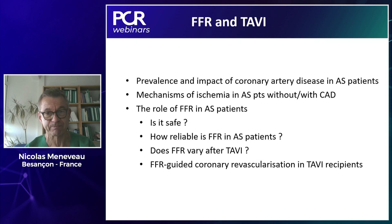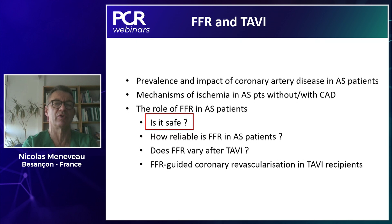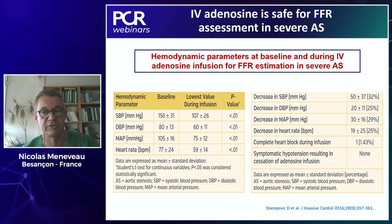Is it safe to give IV or intracoronary adenosine in elderly patients with severe aortic stenosis? The answer is yes, it is safe. IV adenosine is safe and well-tolerated for FFR assessment in these patients. It is associated with a significantly greater drop in systolic, diastolic, and mean arterial pressures compared with baseline, but is not associated with any clinically significant adverse event.